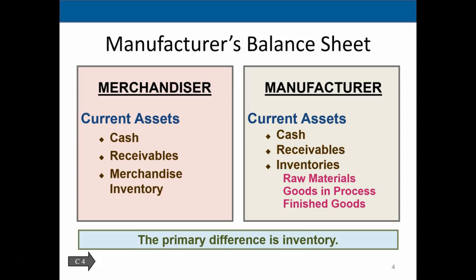Moving to a manufacturer, we still have cash, receivables, and inventory, but now inventory is broken down by the manufacturing process. For example, if we produce guitars, we have raw materials — the wood in the corner — goods in process, which are the guitars halfway done, and then finished goods, the guitars that are done and ready for sale. That's the new thing: how do we allocate cost to that production process?